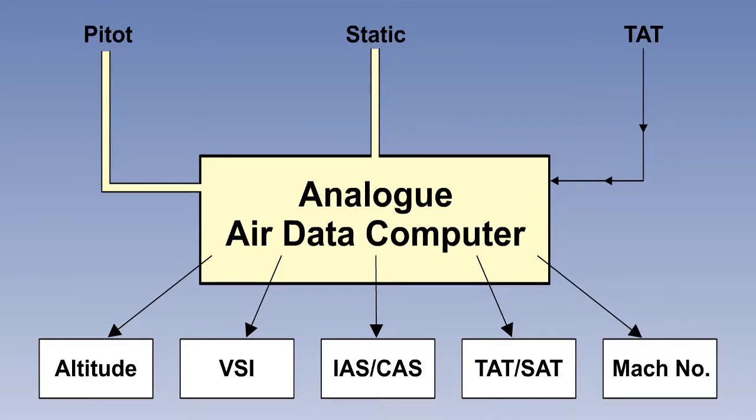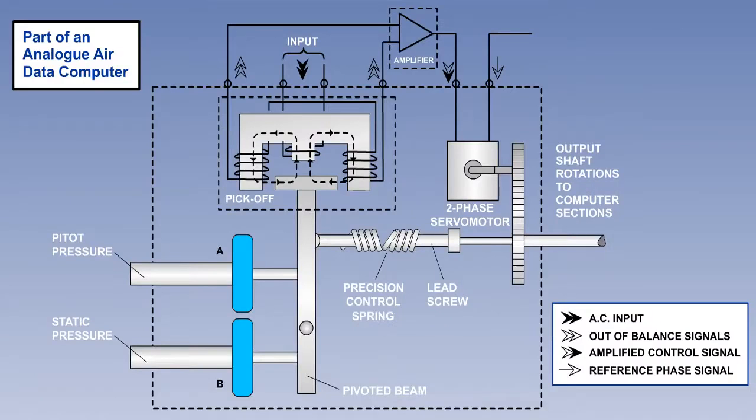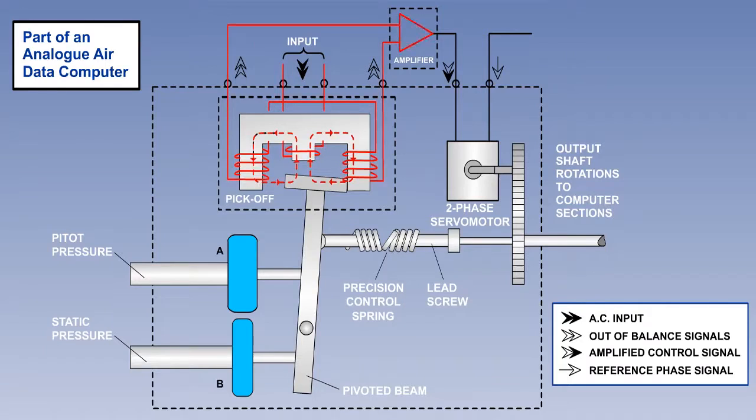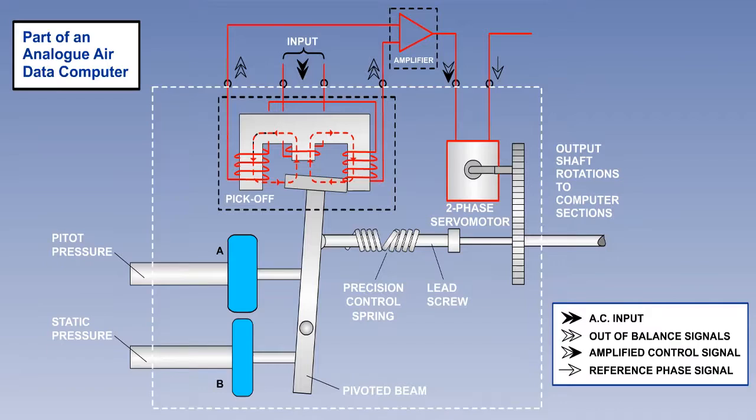In the earliest air data computers, pitot and static pressures were passed directly down tubes from the pitot head and the static vents. This is the airspeed part of an analogue air data computer. Pitot and static are passed directly to two pressure capsules. The capsules are attached to an I-bar, which is pivoted. Movement of the pressure capsules makes the I-bar move sideways, changing its position relative to the E-bar. This causes an out-of-balance signal to be sent to the amplifier, and then the servo motor, which turns the shaft.